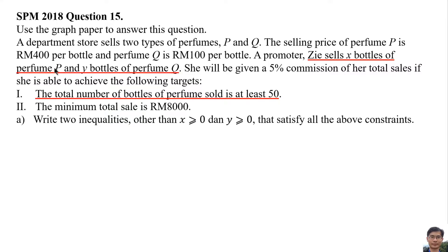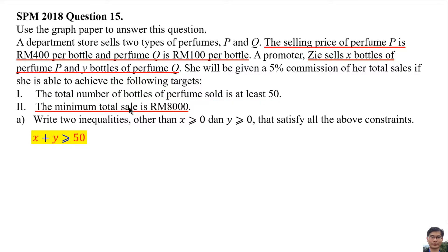There are X bottles of perfume P and Y bottles of perfume Q, so the total number of bottles is X plus Y. At least means more than or equal to 50. The total sale is the sales of perfume P and perfume Q. The price of perfume P is RM400 per bottle, so the sale of X bottles is 400X. Each perfume Q is RM100, so the sale of Y bottles is 100Y. Minimum means more than or equal to 8000.